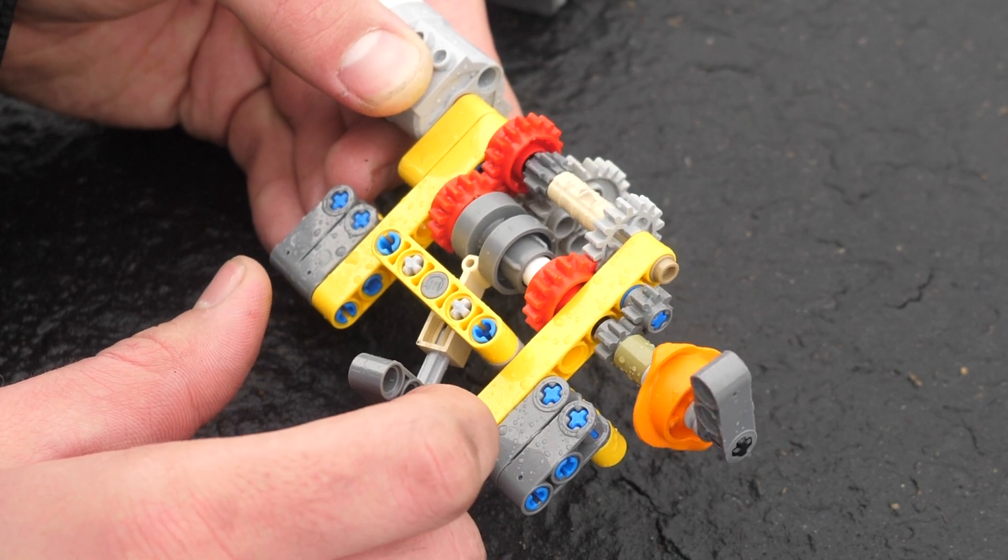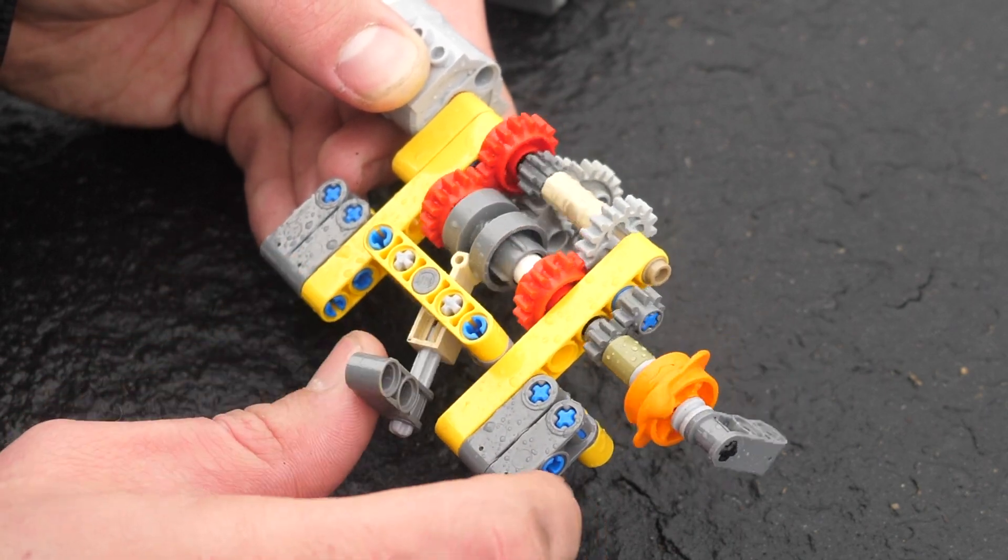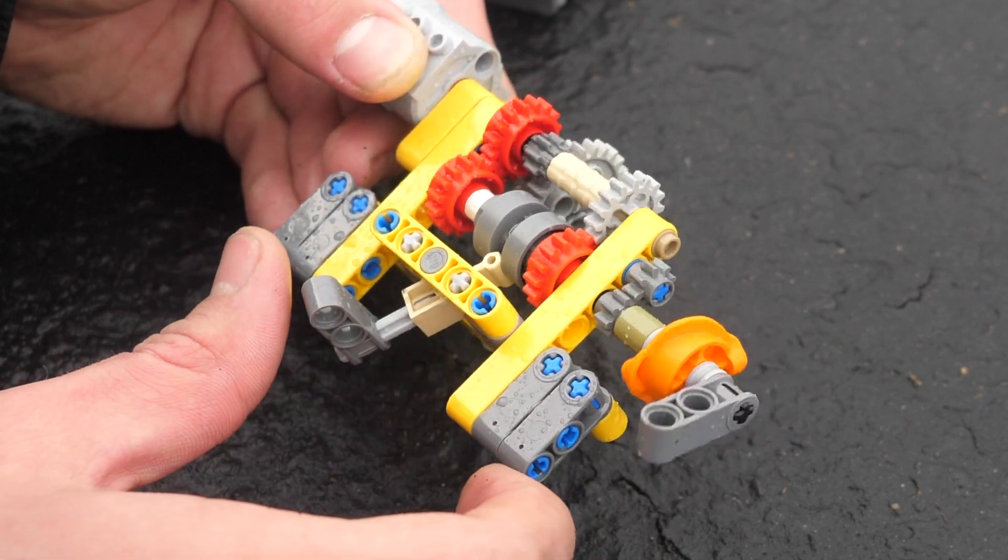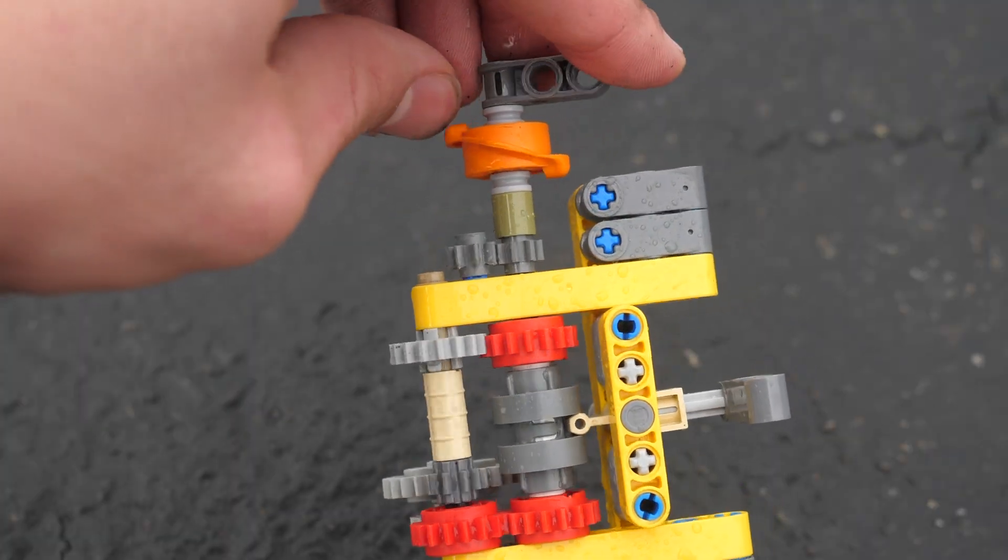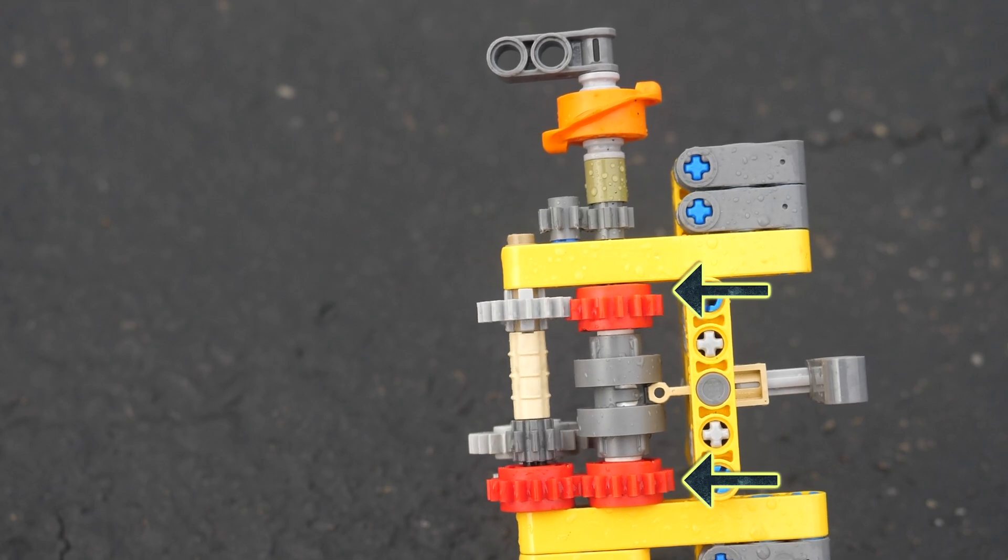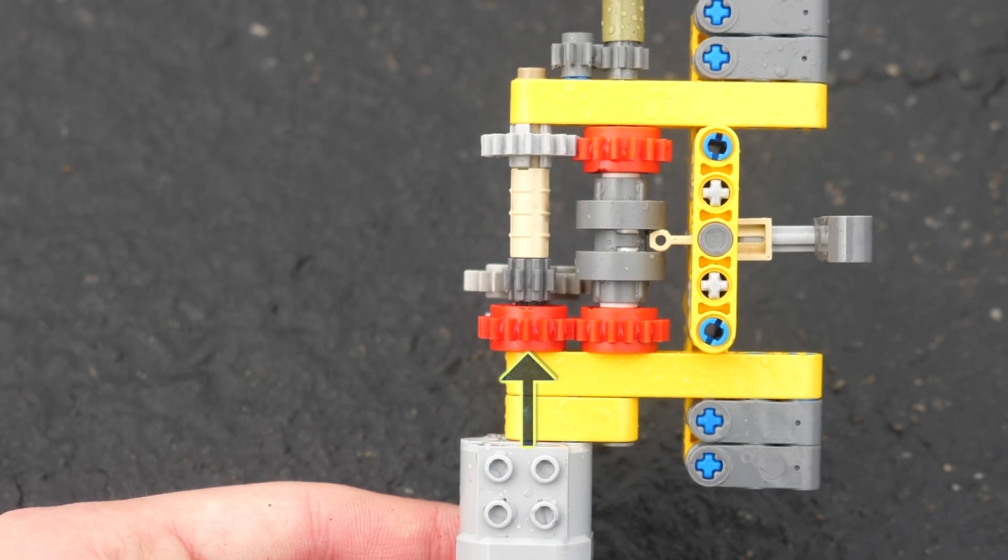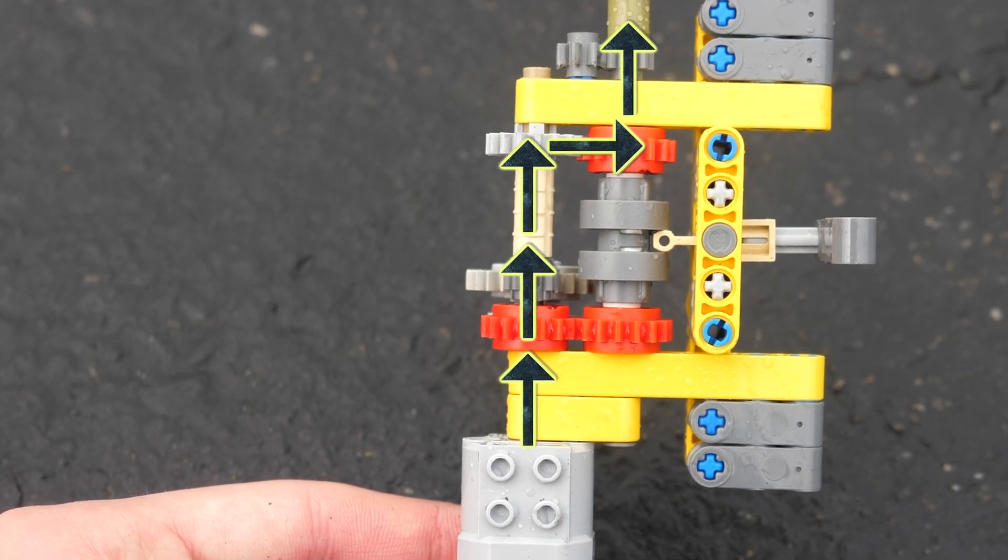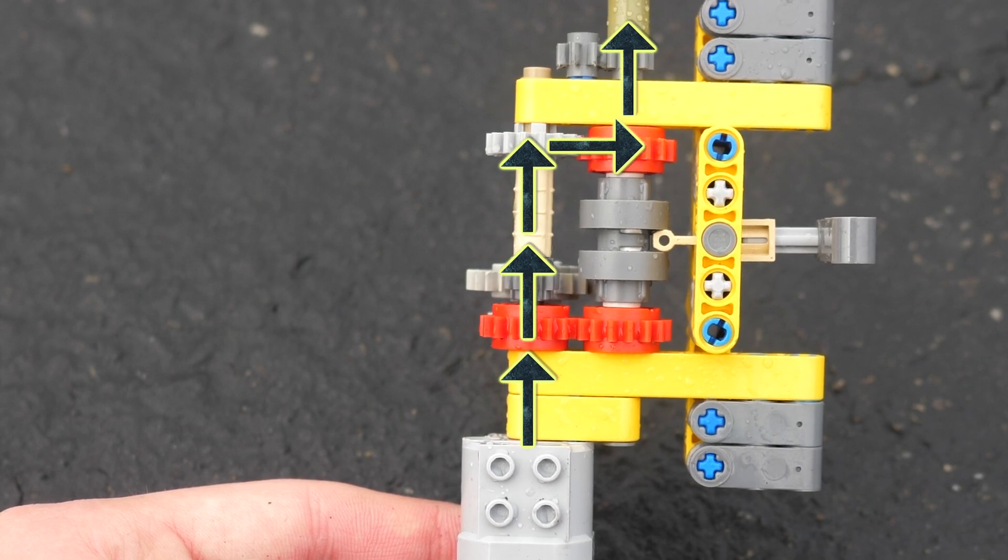I've created a very basic driving ring transmission for demonstration purposes. The motor's axle is the input, and here we have the output. We can either lock the output into the fast gear or the slow gear. In the fast gear, the motion simply travels between a pair of 16 tooth gears, giving us a ratio of 1 to 1.